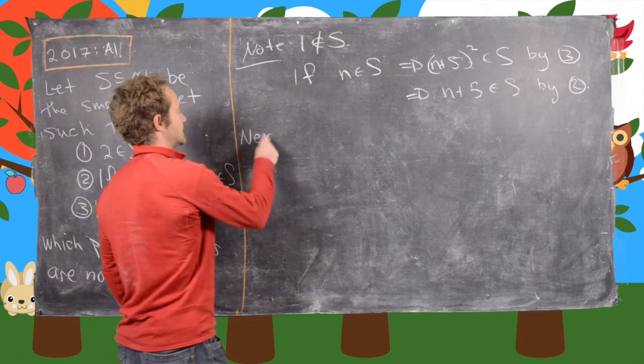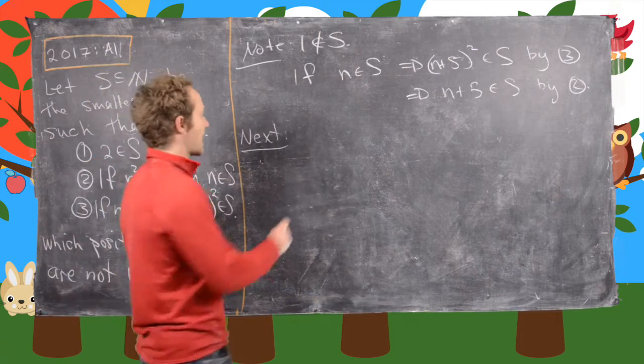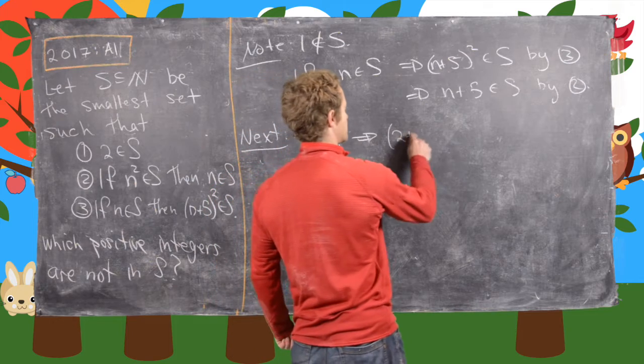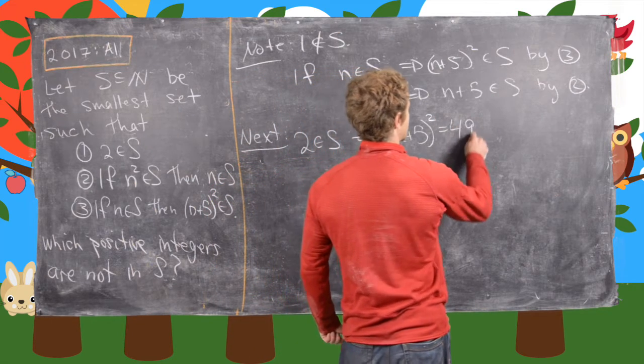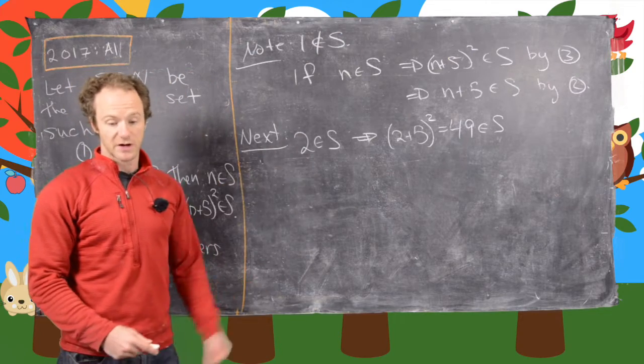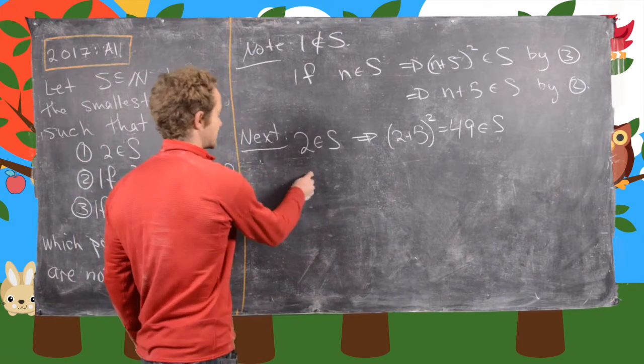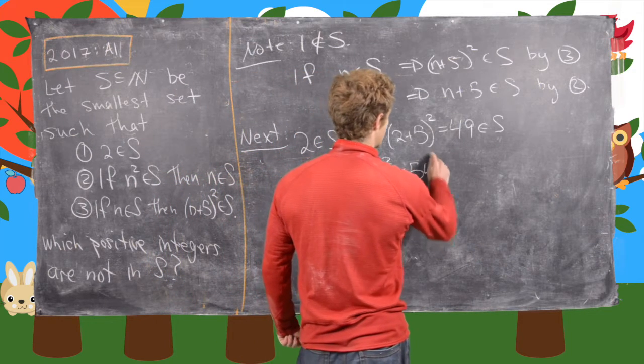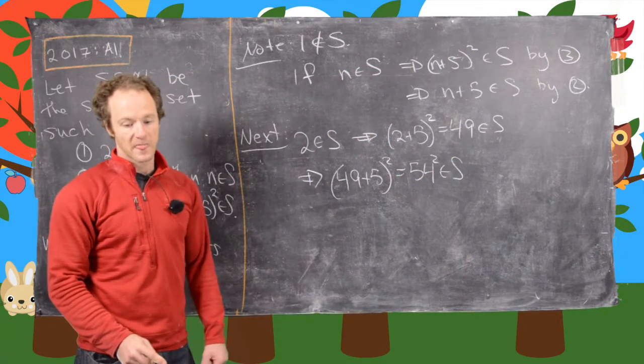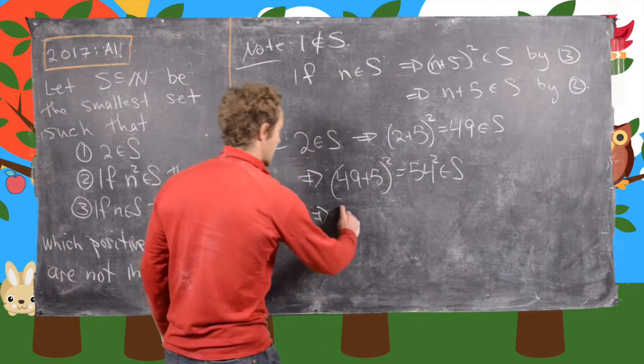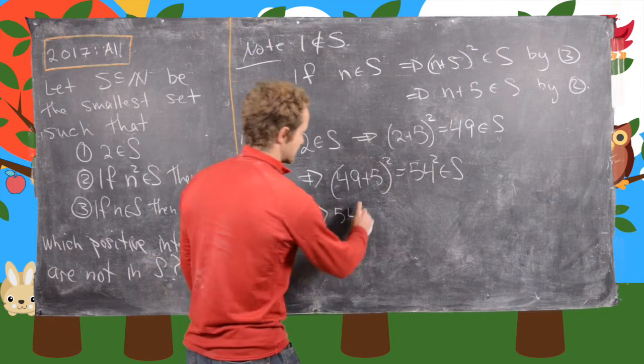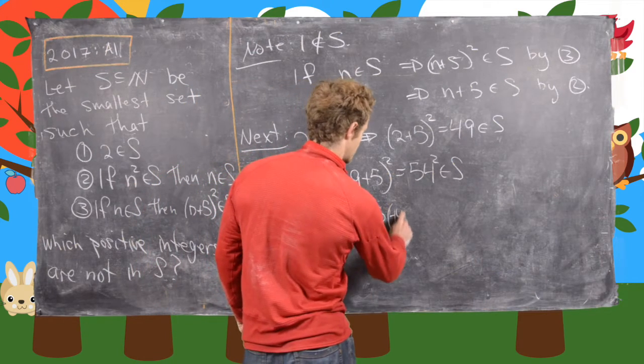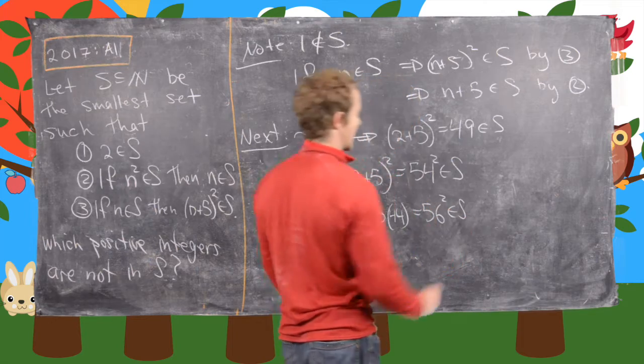So the next thing that we'll do is the following little calculation. So we know that 2 is in S and that tells us that 2 plus 5 squared, which equals 49 is in S. But now notice that tells us that 49 plus 5 squared, which is equal to 54 squared is also an element of S. And now from here what we can do is see that 54 squared plus 5 times 44 is equal to 56 squared, which is an element of S.